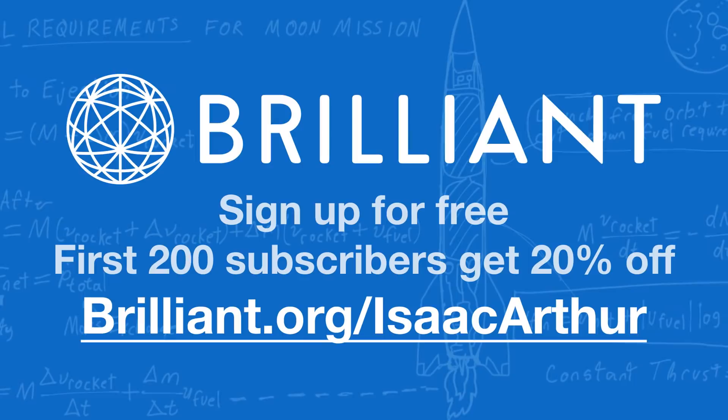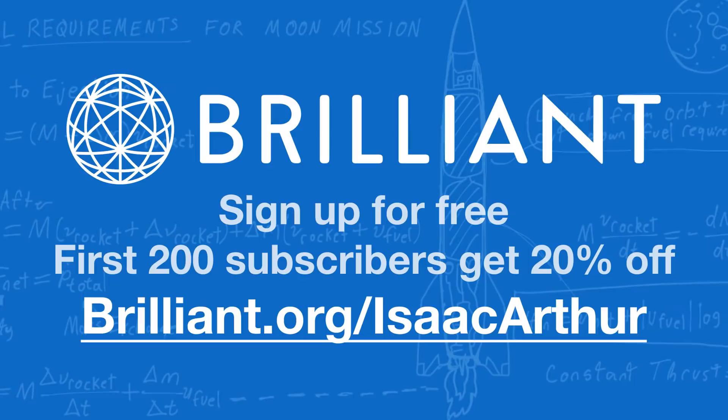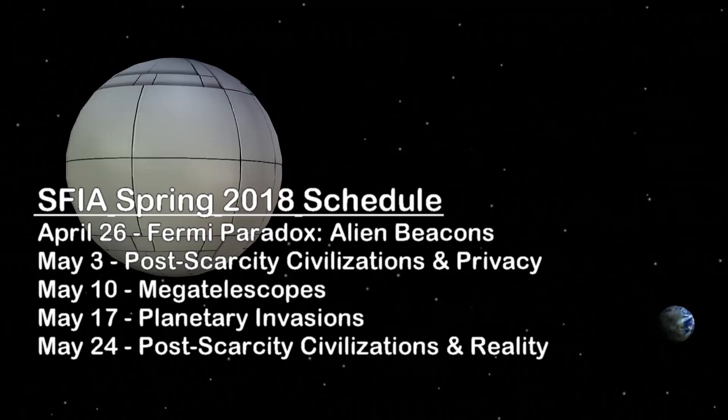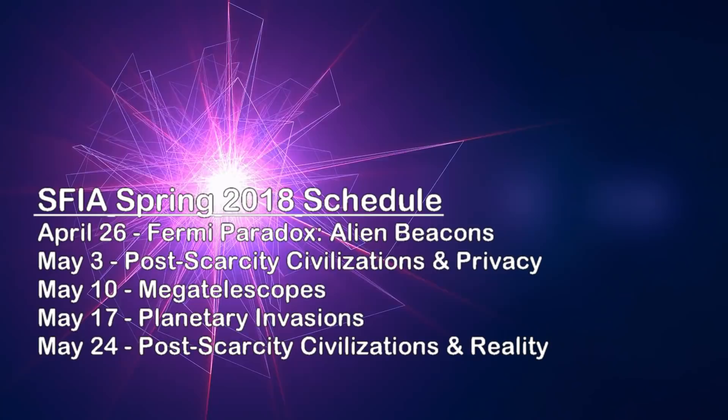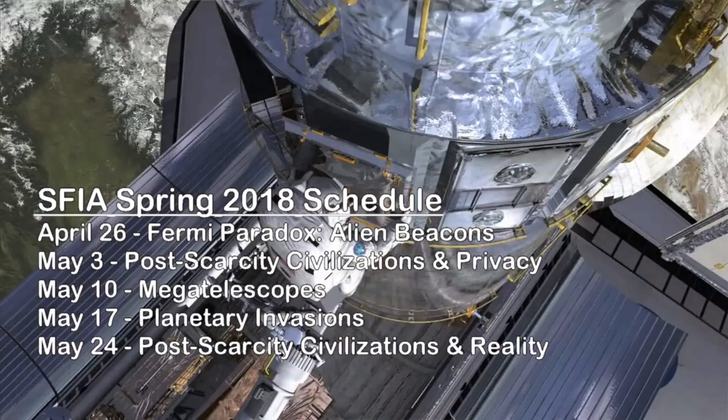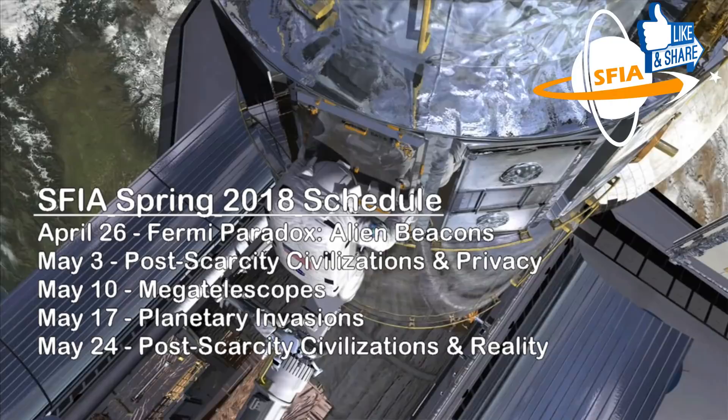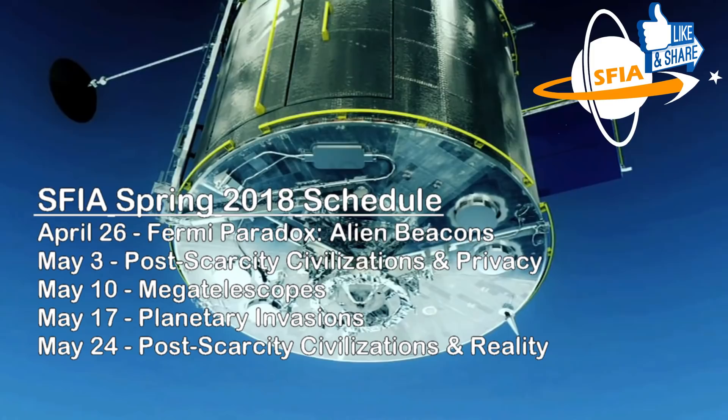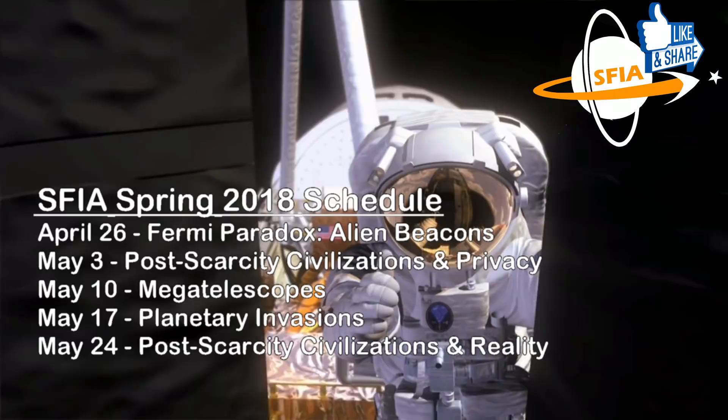Next week we will return to the Fermi Paradox to discuss alien beacons, and ask just how far away you can say hello to civilizations if you want to, as well as what other reasons you might have to build such an enormous transmitter. The week after that we will take a look at the kind of civilizations that can afford to make things like giant beacons or telescopes as we start an expanded series on post-scarcity civilizations, and the week after that we will be exploring how far away you can see with a look at megatelescopes and just how big you can make a telescope. For alerts when those and other episodes come out, make sure to subscribe to the channel. And if you enjoyed this episode, hit the like button and share it with others. Until next time, thanks for watching and have a great week.